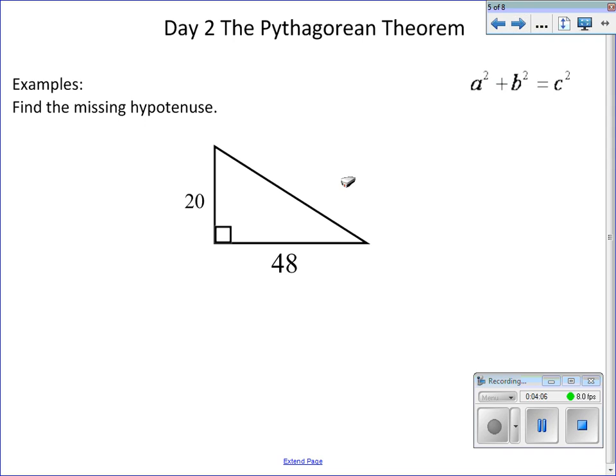Let's look at another example. This one, the numbers are a little bit bigger, so we might have to use a calculator to help us. Here's our A, here's our B, and we're going to use A squared plus B squared equals C squared to find our C. Plug it in: 20 squared plus 48 squared equals C squared.